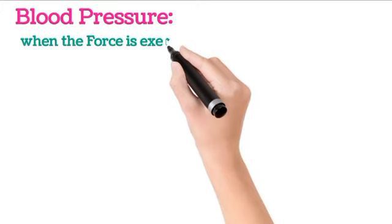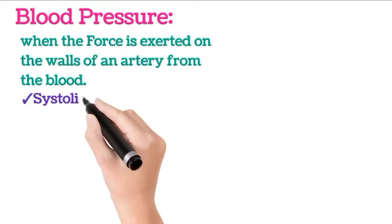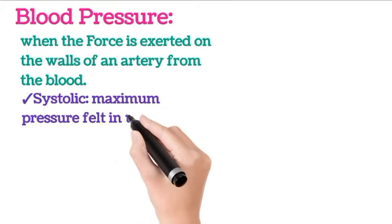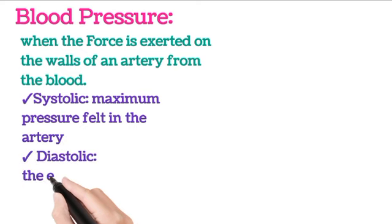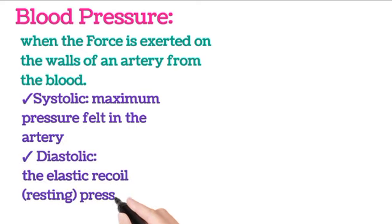Blood pressure: The force exerted on the walls of an artery from the blood. Systolic: Maximum pressure felt in the artery. Diastolic: The elastic recoil, resting pressure between beats.